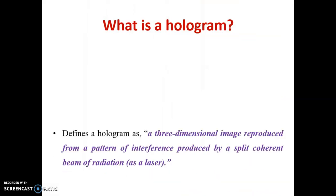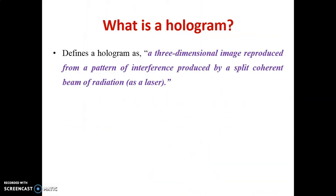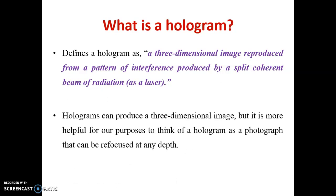Holograms are three dimensional images reproduced from a pattern of interference produced by a split coherent beam of radiation. Holograms can produce three dimensional images, but it is more helpful to think of a hologram as a photograph that can be refocused at any depth. Through a hologram we can have photographs of an object in three dimensions, and along with length and breadth we can also have depth-related calculations of the object.